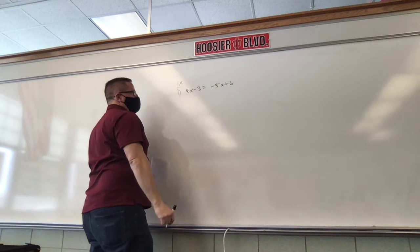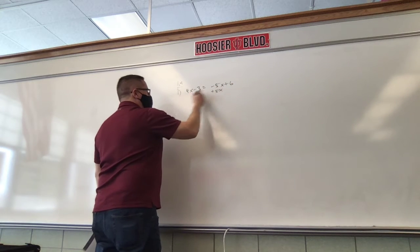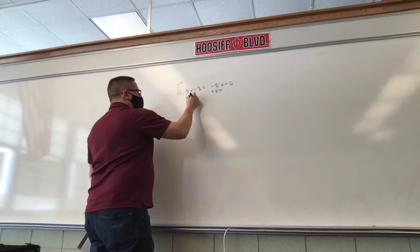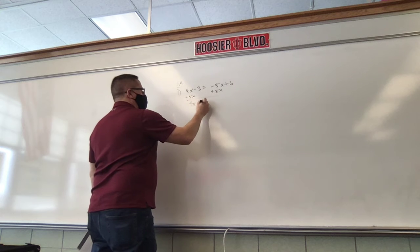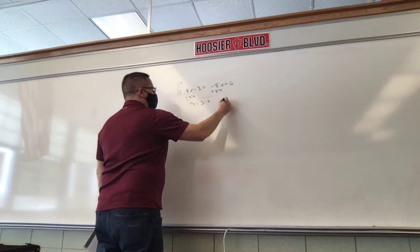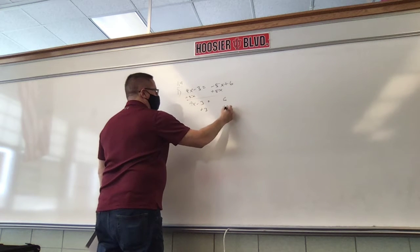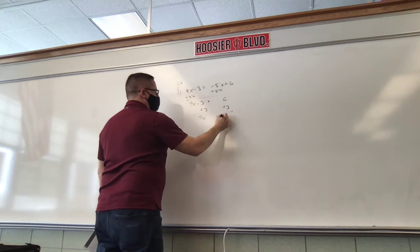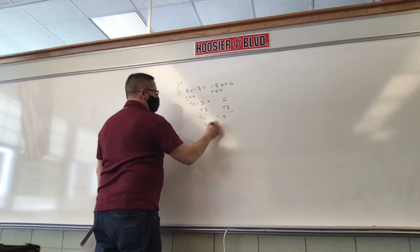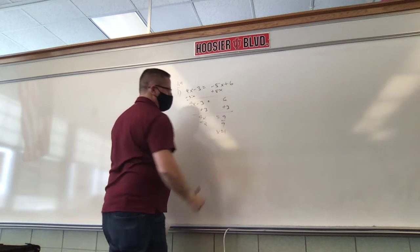Solving something like that, we add 5x to each side. 9x minus 3 equals 6. Add 3 to each side. 9x equals 6 plus 3, which is 9. Divide by 9, x is 9 divided by 9, which is 1.